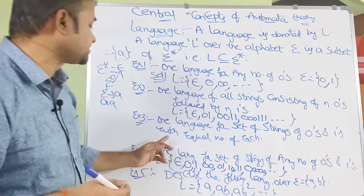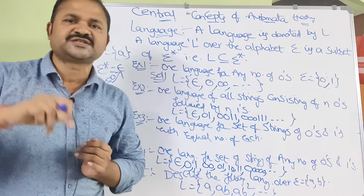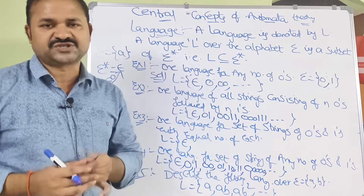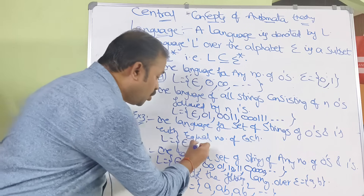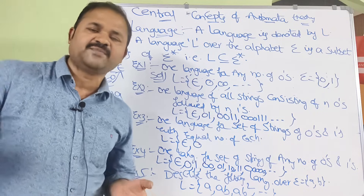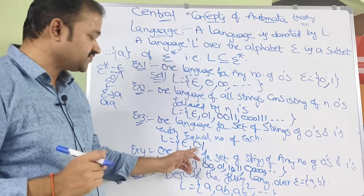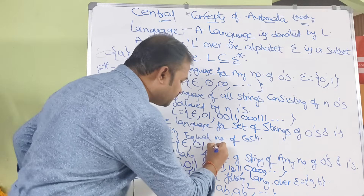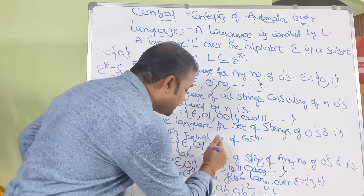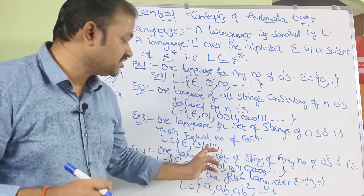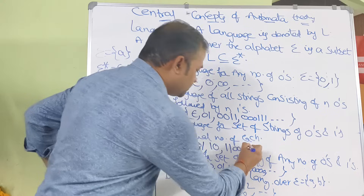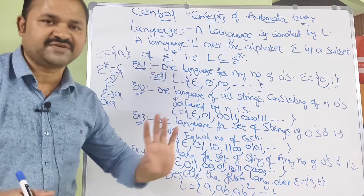Fourth example: the language for set of strings of zeros and ones with equal number of each. The first string is epsilon. We cannot take just 0, because it has one zero but no ones. We can take 01 (one zero, one one) or 10 (one zero, one one). We cannot take 11 since there are no zeros. We can also take 1100 (two ones, two zeros) or 0101. Likewise we can have n number of strings where number of zeros equals number of ones.